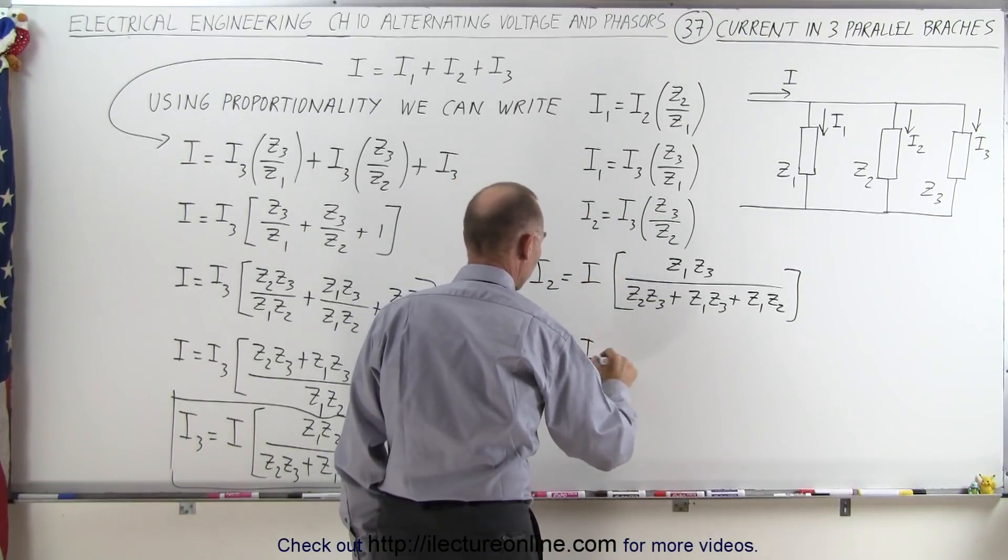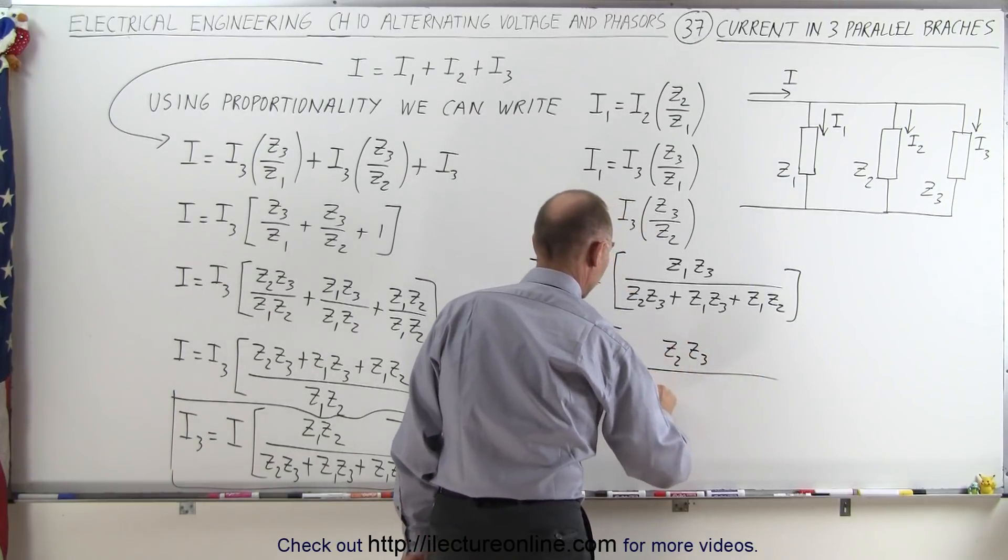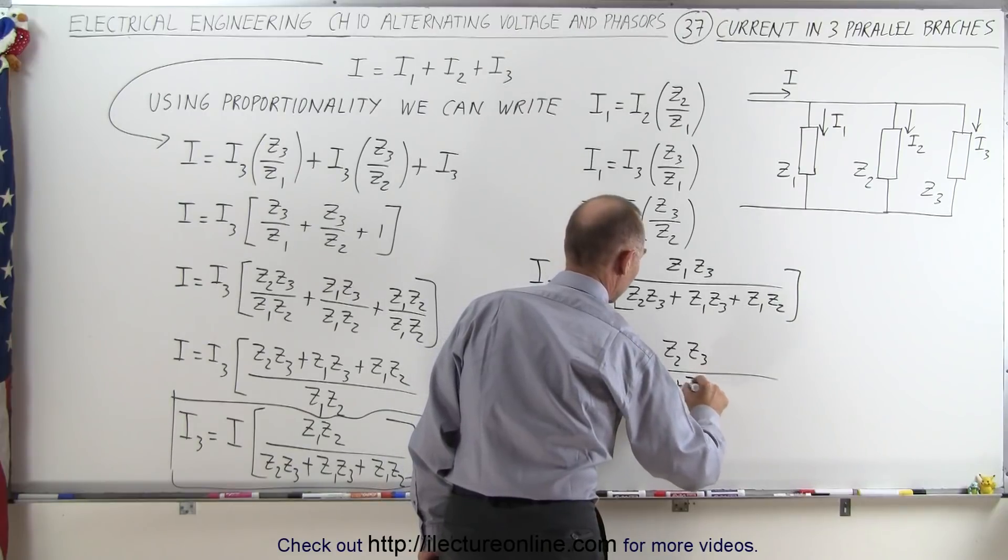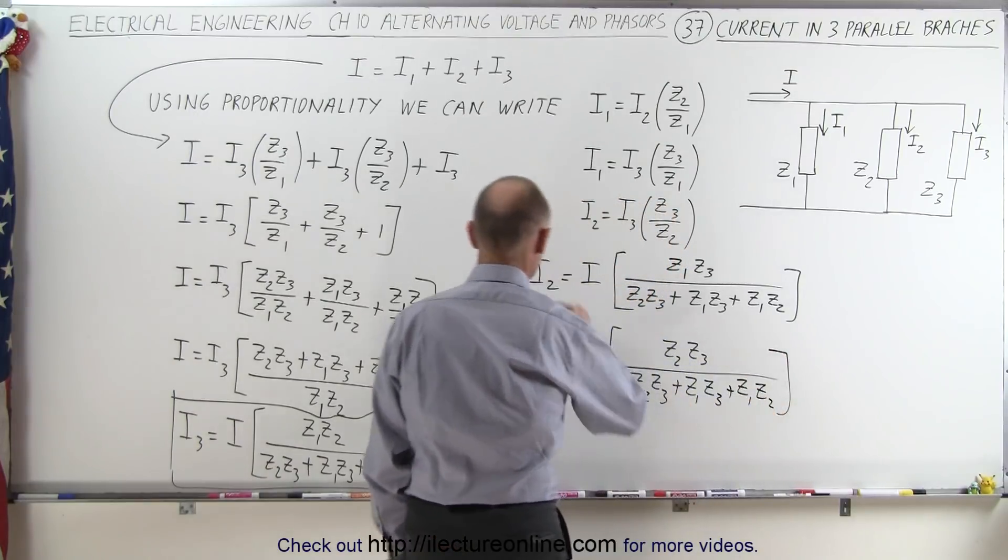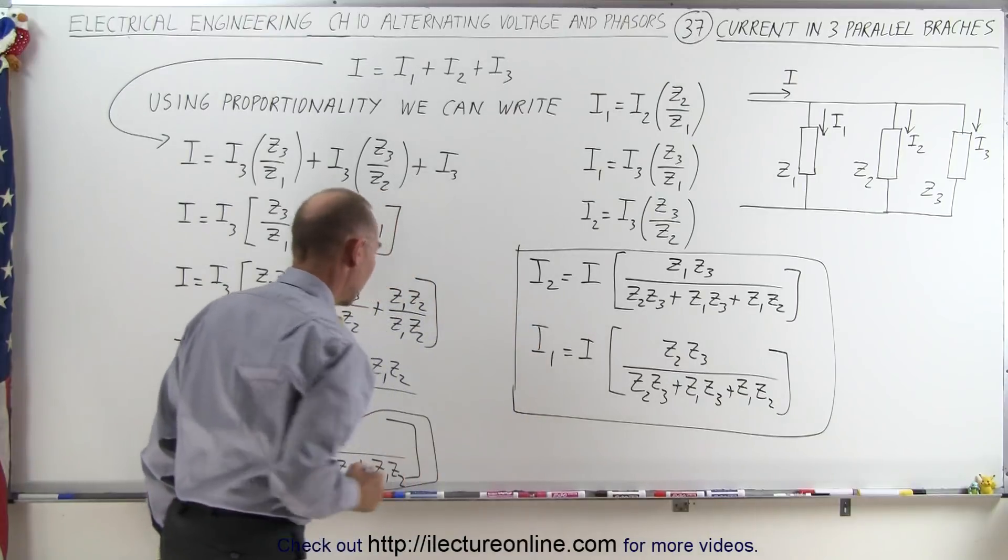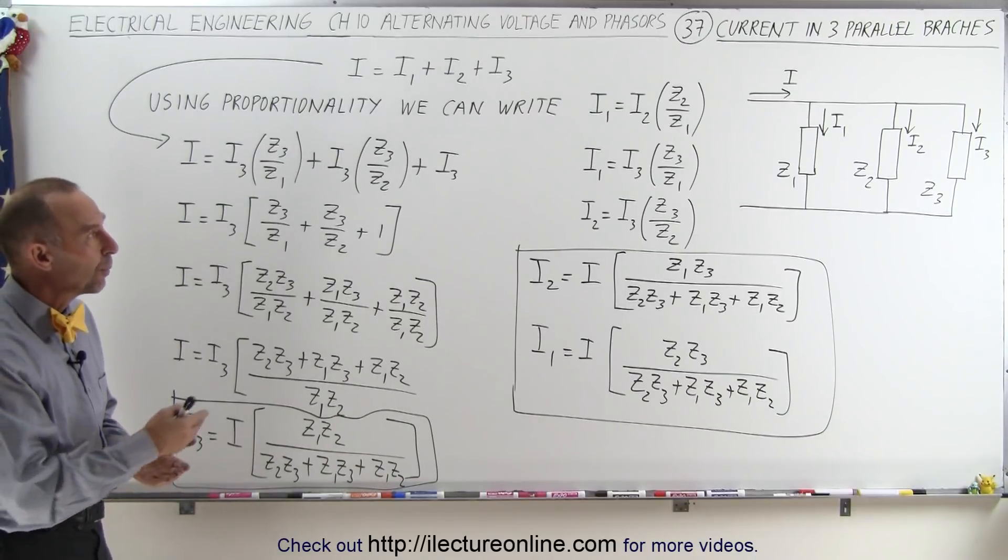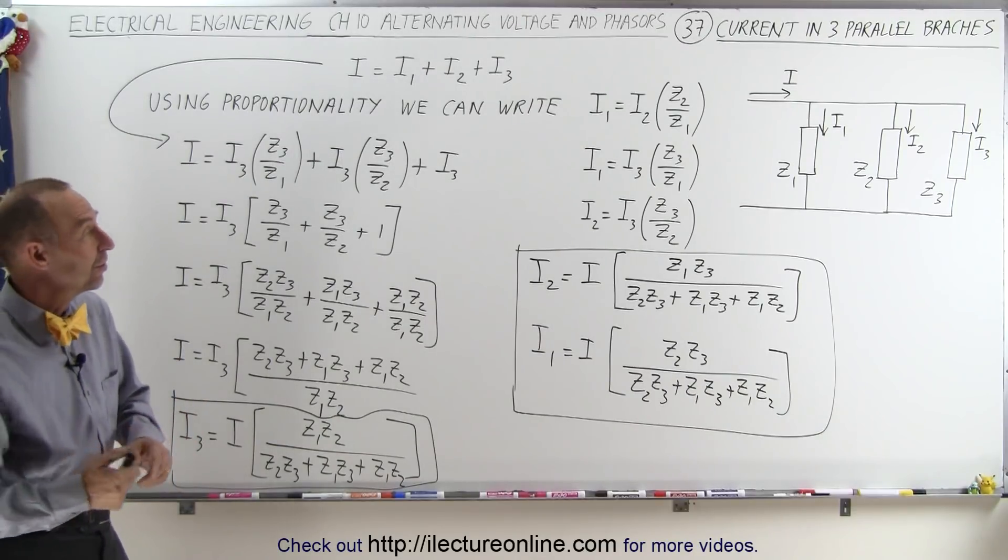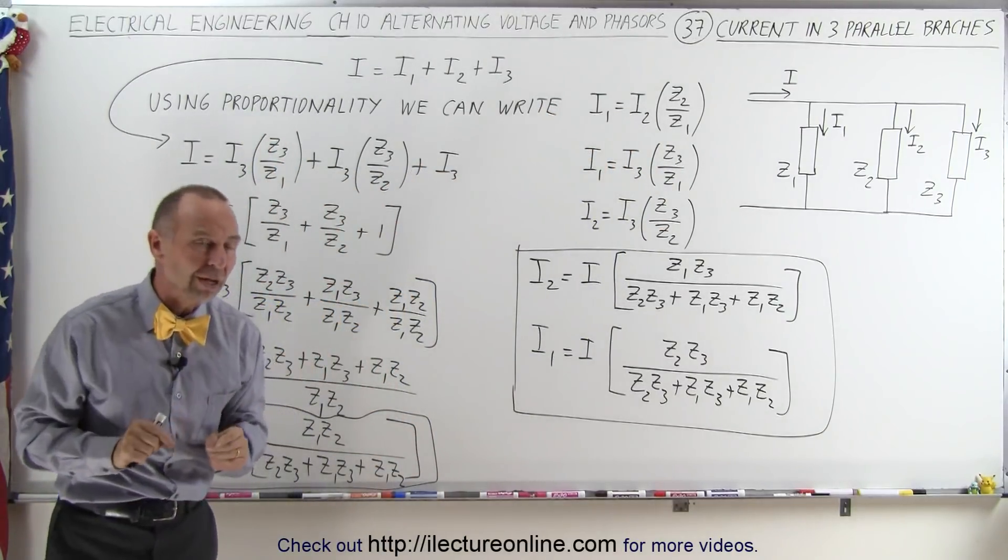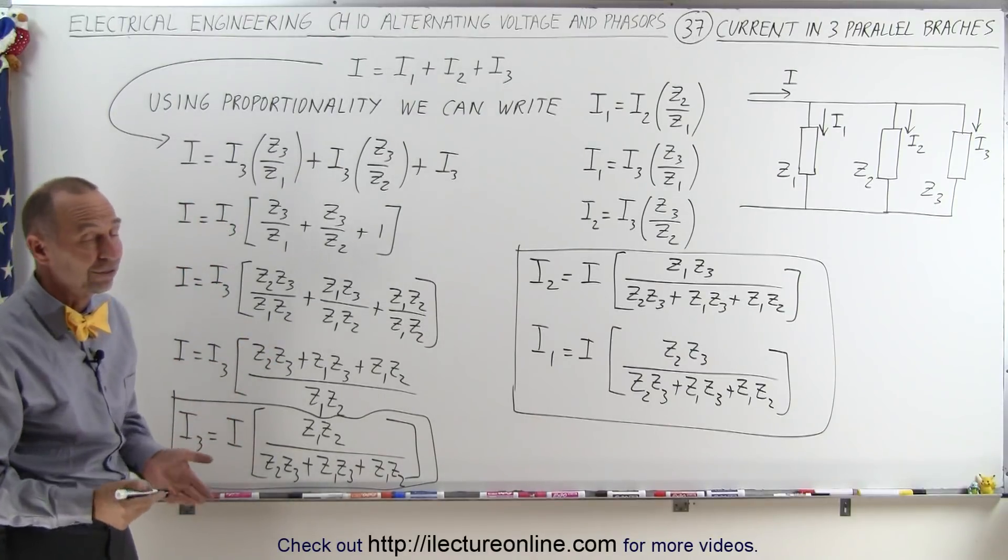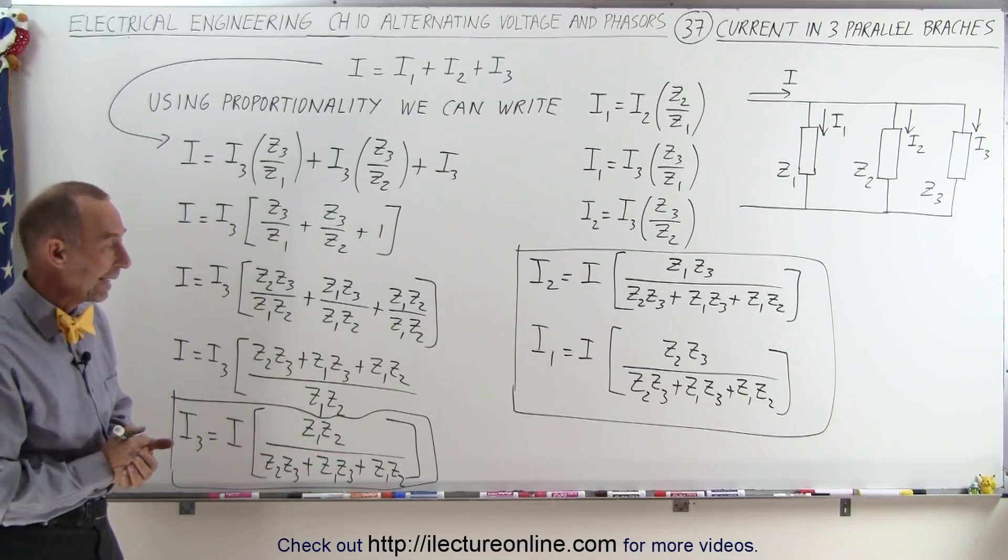And also, I1 will be equal to the total current I times, the numerator will be Z2 Z3, divided by Z2 Z3 plus Z1 Z3 plus Z1 Z2. And there you have all three currents, I1, I2, and I3, in terms of the total current and the impedances when we have three parallel branches. And the interesting thing is, it all came from simply realizing there was this proportionality of the currents between any two branches, which allows us to come up with equations like this for any number of branches, but at least here we see how it's used for three branches. And that's how it's done.